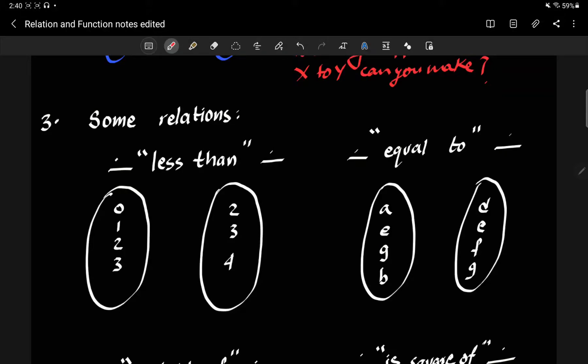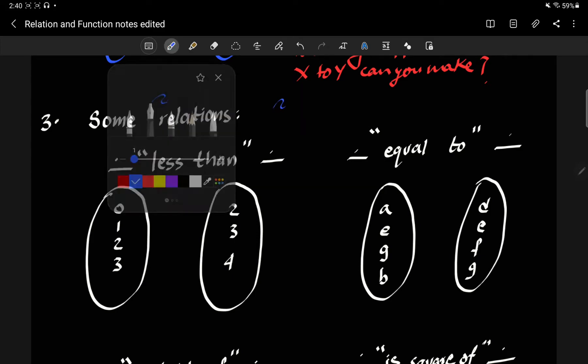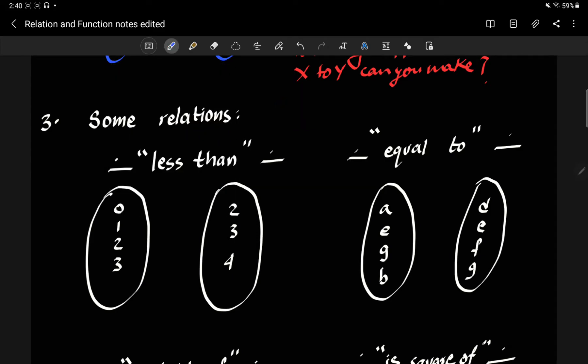All right, so in the previous video, we saw maps between sets. Now, these maps between sets are given a special name. They are called relations. So when we say a set, we can use the word a set as mapped to another set, or we can say a set is related to another set.